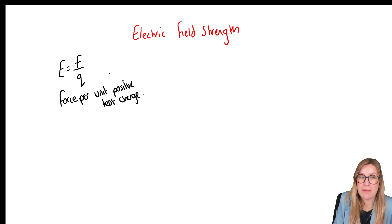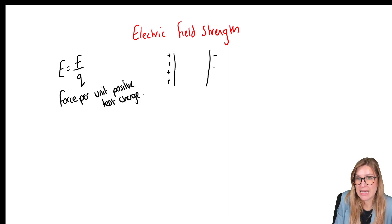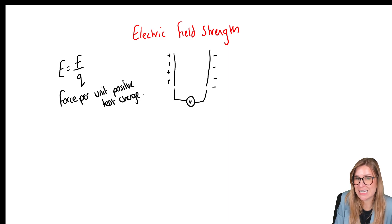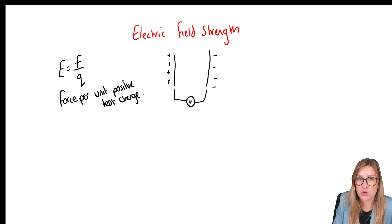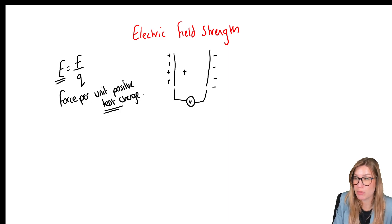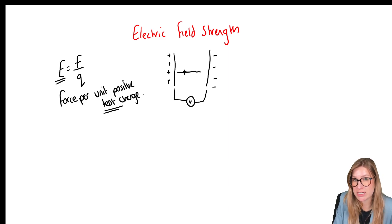So the unit positive test charge — let's say I had two plates: one with a positive charge and one with a negative charge. We know there's a potential difference between those two plates. If I place a unit positive test charge there, it's going to be repelled from the positive plate and attracted towards the negative plate. That gives us the direction of the electric field lines between the positive and negative plate.